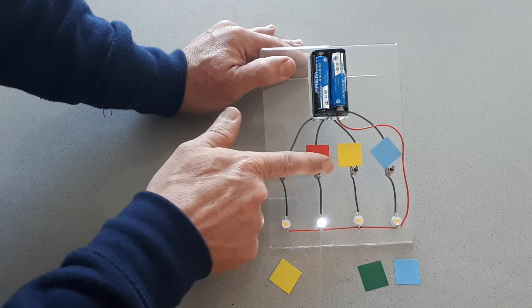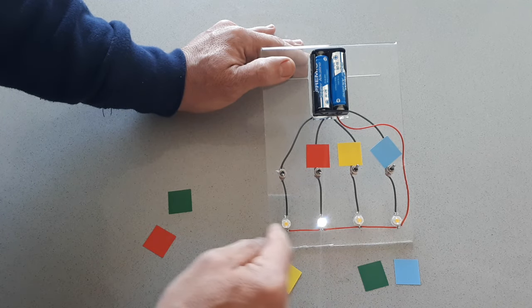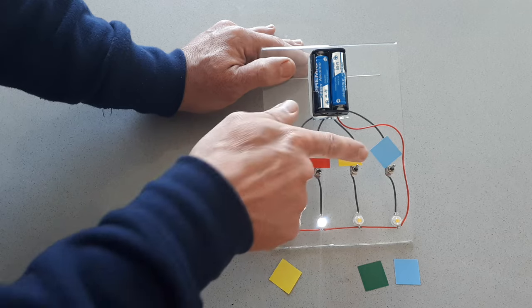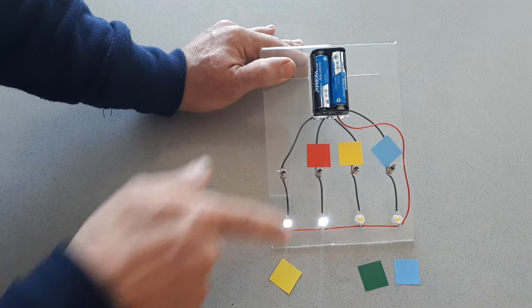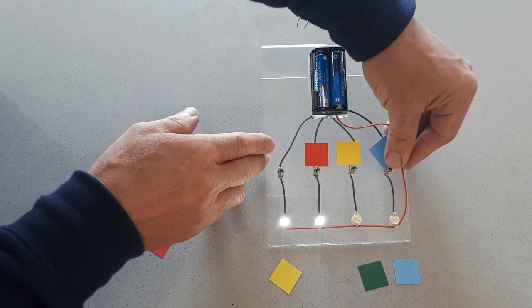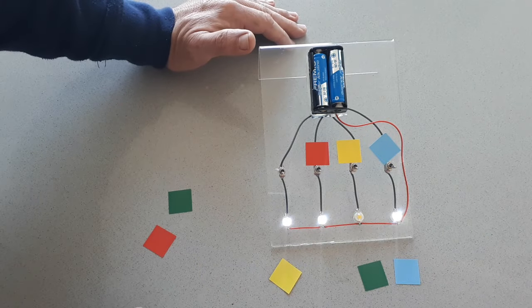If I connect the red one, I don't have a red one so I don't have another light on. If I switch on the yellow one, I get the yellow one. And if I do this with the blue one, I get the blue one.